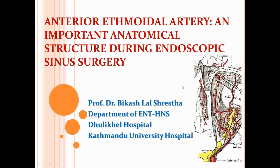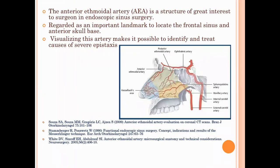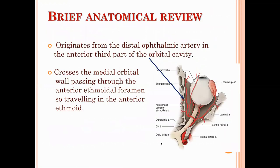Today I am going to talk on the anterior ethmoidal artery. This is an important anatomical structure that must be known for rhinologists, and it is a very important structure during endoscopic sinus surgery. This anterior ethmoidal artery is a structure of great interest for an endoscopic sinus surgeon because it makes an important landmark to locate the frontal sinus and anterior skull base area. Apart from that, it is also important to visualize this artery during severe epistaxis cases.